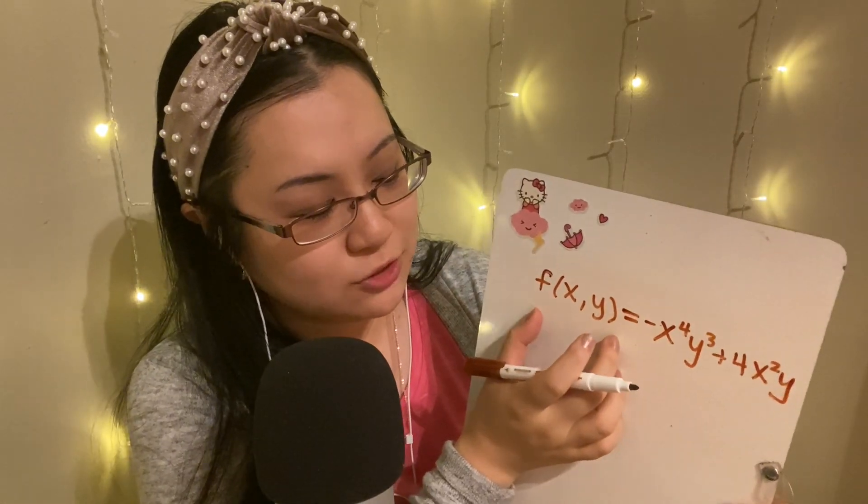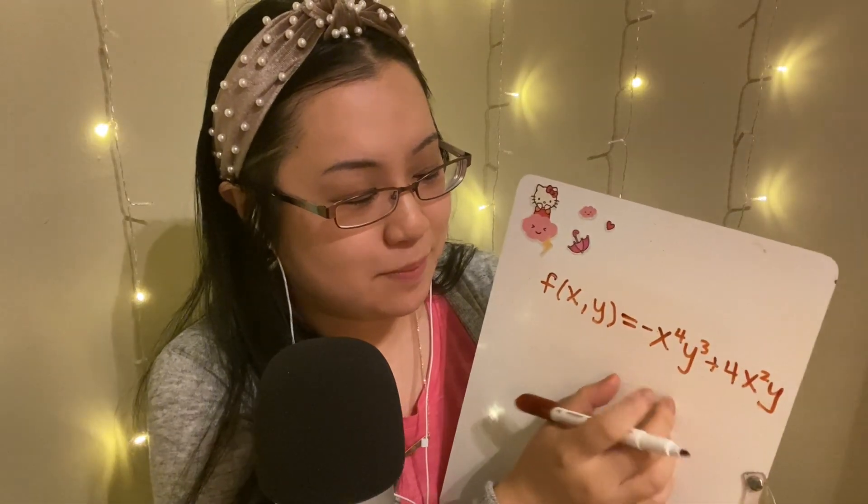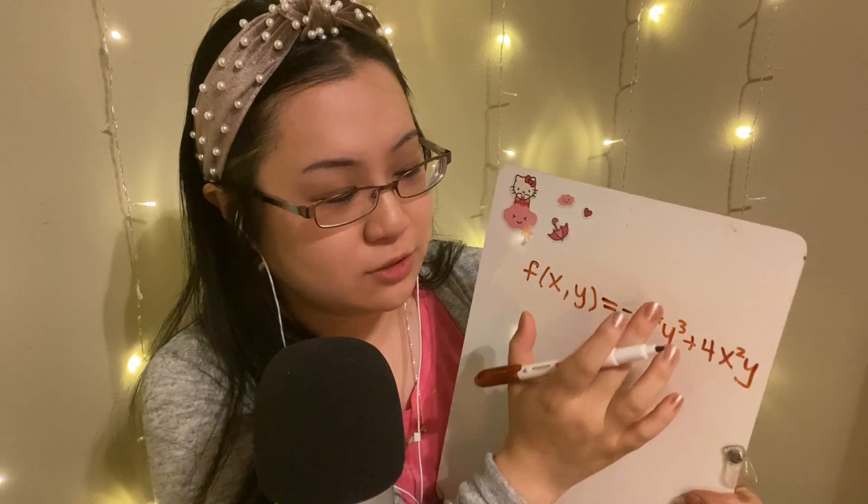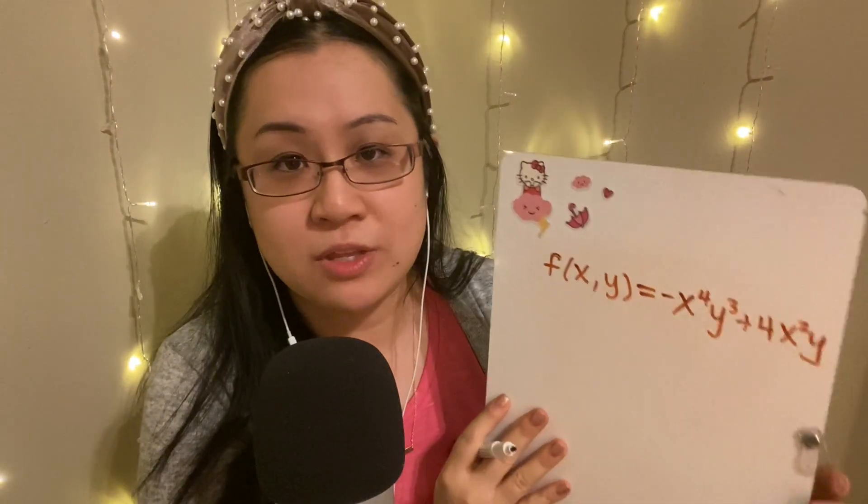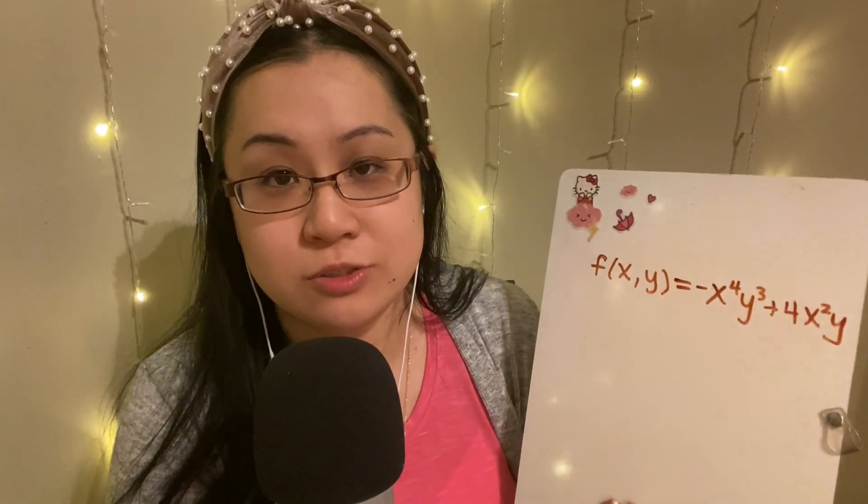For partial derivatives, it's actually very similar, but we now have a function of multiple variables. Let's write one with two variables — a function of x and y. Let's say we have f(x, y) = negative x to the fourth y cubed plus 4x squared y. Now you see we have a function of two variables — our input is going to be an input for x and an input for y. Our set of instructions is a bit more complicated, but it's the same idea.